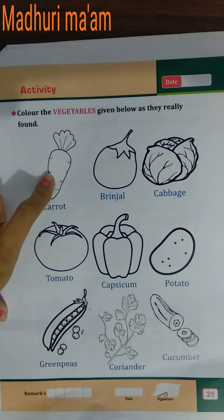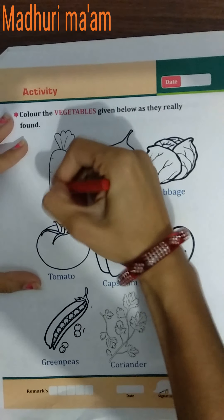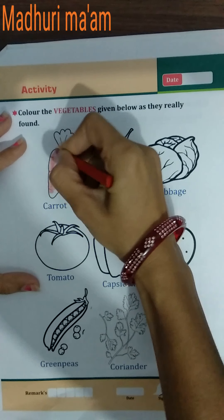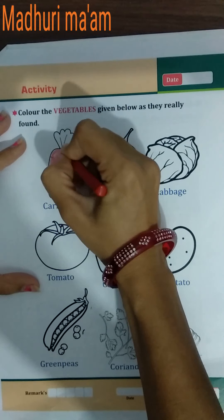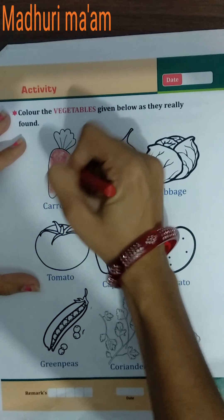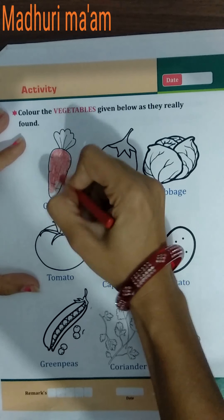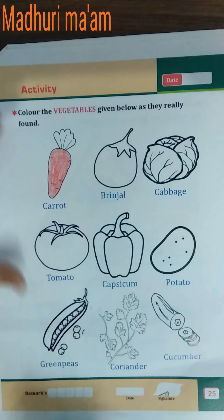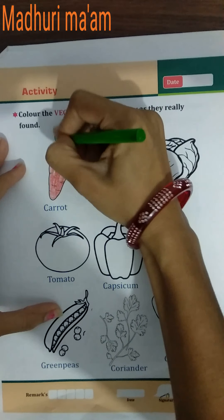So, the first picture is carrot. Children, what is the color of carrot? Red color. So do red color here. We also find orange color carrot — there are two types of carrot: red color carrot and orange color carrot. But we do red color here. And the top part comes in green color.